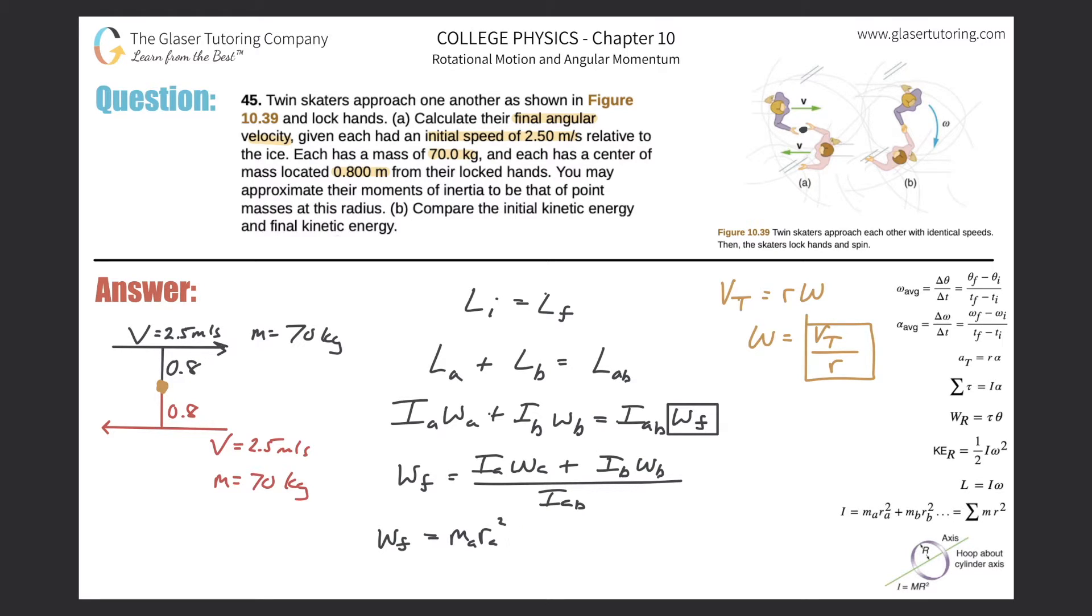So now this becomes the tangential velocity for player A divided by then the radius of player A, RA. And now that's going to be equal to then the moment of inertia for B, so that's MB RB squared multiplied then by VTB over RB. And that all divided by now the total system moment of inertia. So to get the total system moment of inertia here, we just basically take these two and then add them together. So now it's going to be MA RA squared plus MB RB squared.